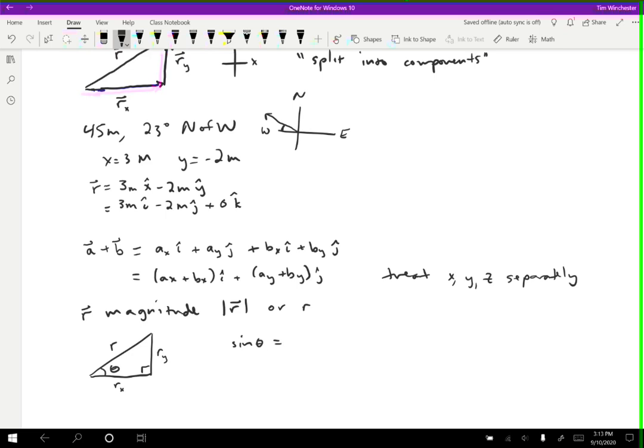If you know the angle and the magnitude, then you can figure out the x and y components by using sine and cosine. Or if you know the x and y components, then the magnitude r is just going to be the square root of rx squared plus ry squared, and if it's three-dimensional then plus rz squared as well.